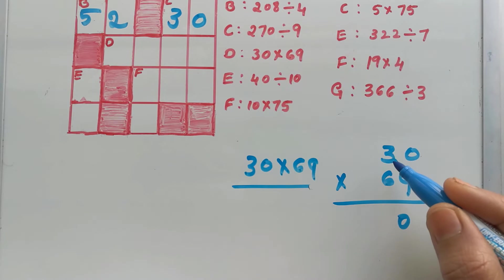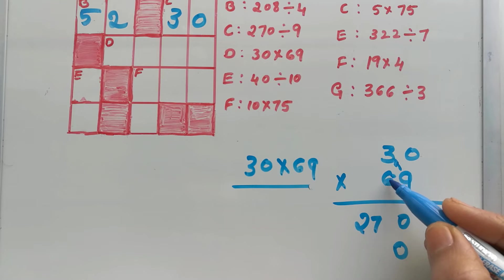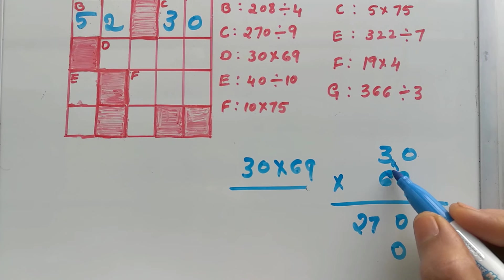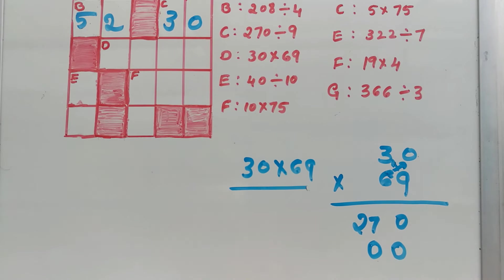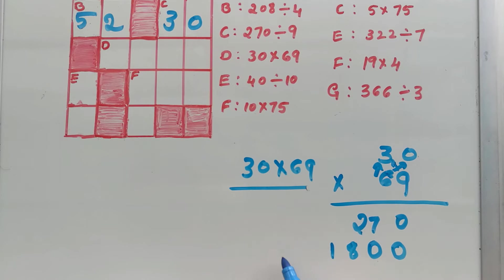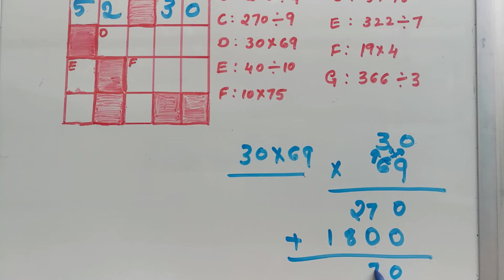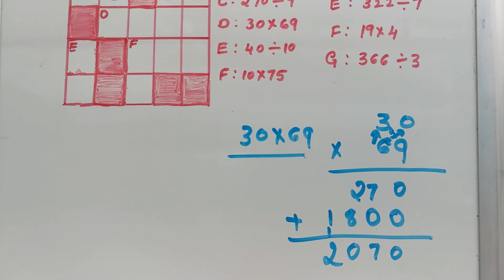Then tens place of second number to tens place of first number: 9 times 3 is 27. For the tens place multiplication, you put a placeholder 0. Now multiply with 6: 6 times 0 is 0, then 6 times 3 is 18. Now add: 0, 7 plus 0 is 7, 2 plus 8 is 10, carry 1 — 1 plus 1 is 2. So D, our answer is 2070.